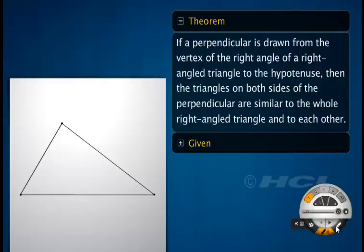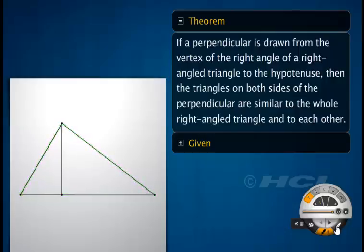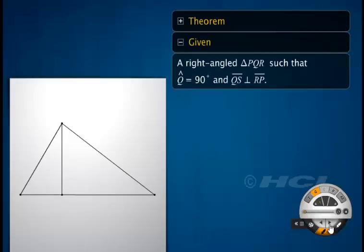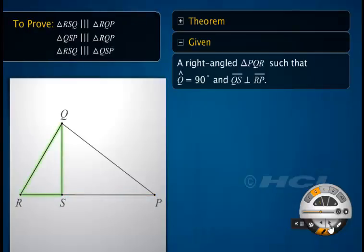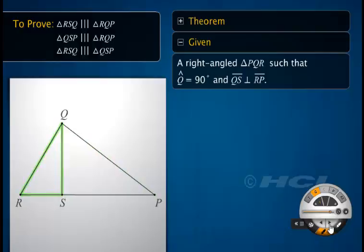Let's prove this theorem. The theorem states that if a perpendicular is drawn from the vertex of the right-angle of a right-angled triangle to the hypotenuse, then the triangles on both sides of the perpendicular are similar to the right-angled triangle and to each other. We are given a right-angled triangle PQR right-angled at Q, and perpendicular QS from vertex Q to hypotenuse RP. We have to prove that triangles RSQ and QSP are similar to triangle RQP, and triangle RSQ is similar to triangle QSP.